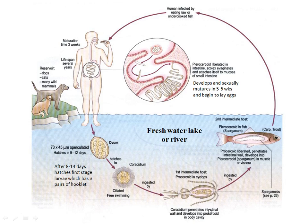The coracidium penetrates the intestine of Cyclops and develops into a procercoid larva in the body cavity. When Cyclops are ingested by freshwater fish, the procercoid larva is liberated, penetrates the intestinal wall, and develops into a plerocercoid larva in the muscles and viscera of the fish. When fish are consumed raw or undercooked, the cycle repeats. Other definitive hosts like dogs, cats, and wild animals can acquire the infection similarly, helping maintain the parasite in the environment.